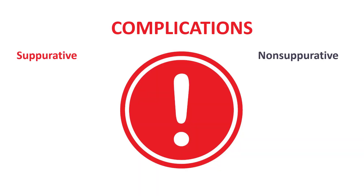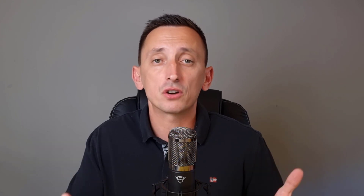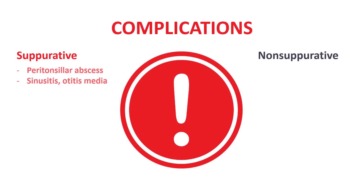There are suppurative and non-suppurative complications. Suppurative complications imply that there is either a local or a systemic spread of infection from the pharynx to other structures. So locally this could mean otitis media or peritonsillar abscess, maybe sinusitis, and all of these complications are very treatable. Not to mention that they are rare to begin with — only a small percentage of patients with strep throat develop these complications.